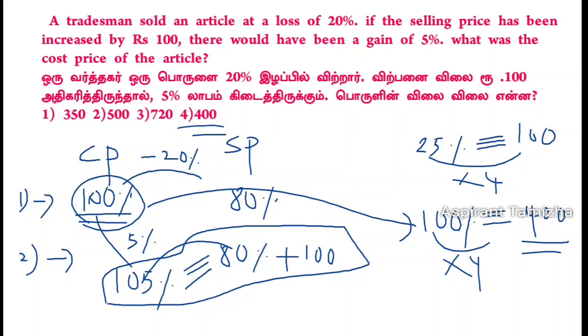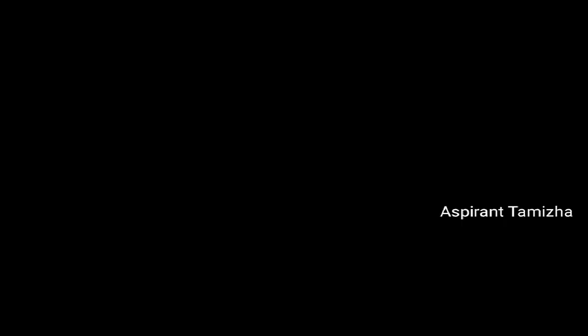Next question: A man sells an article at a profit of 25%. If he had bought it at 20% less and sold it for Rs. 10.50 less, he would have gained 30%. Find the cost price of the article.